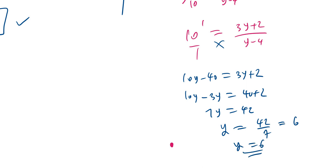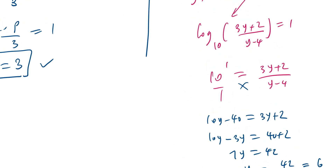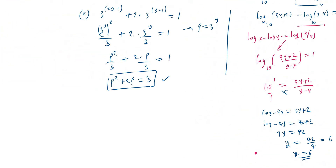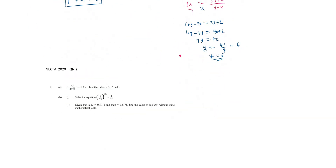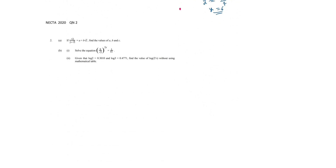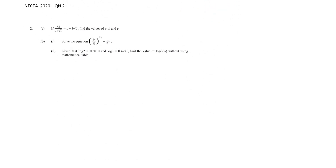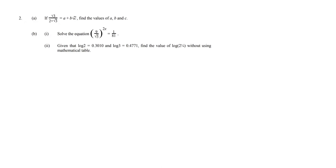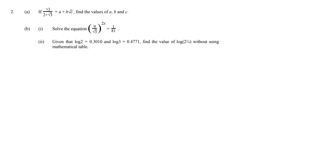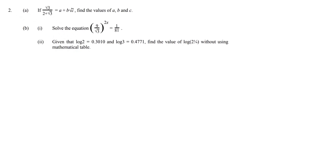So that is question number 2 from Nectar 2021. We go to question number 2, Nectar 2020. This is a rationalizing the denominator question.